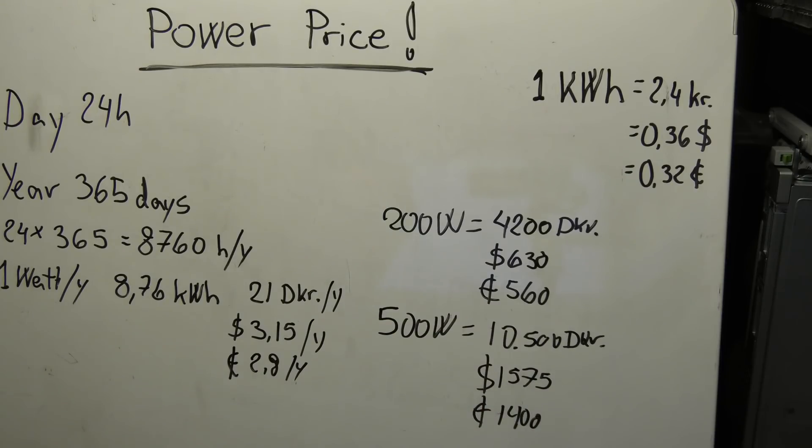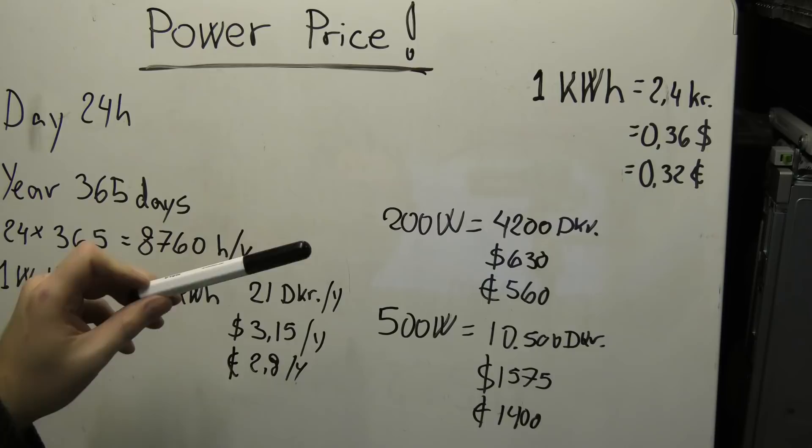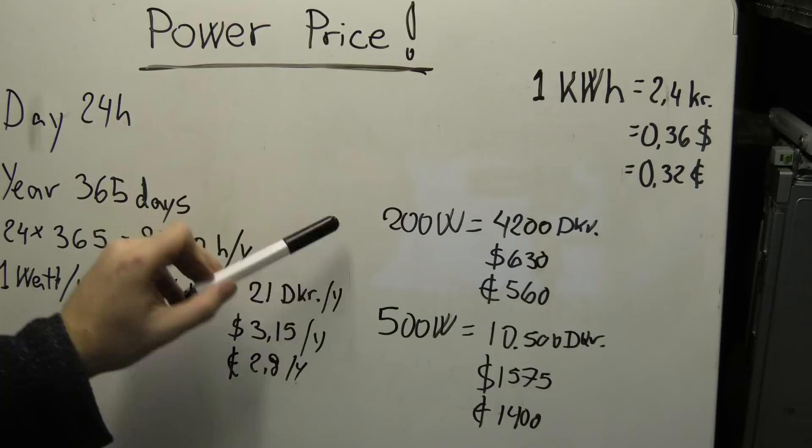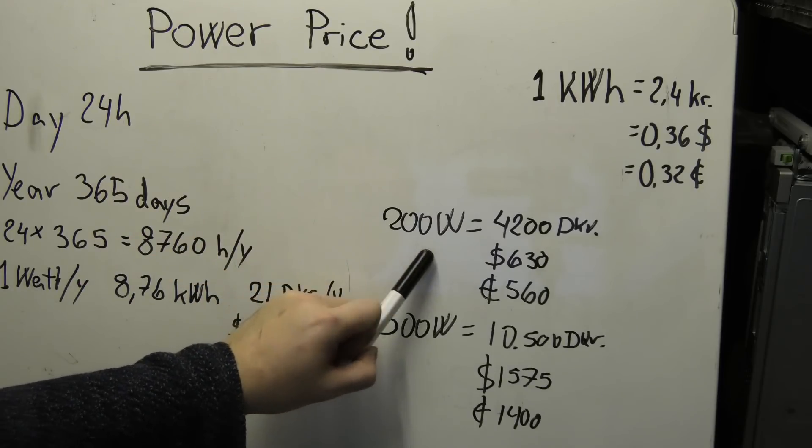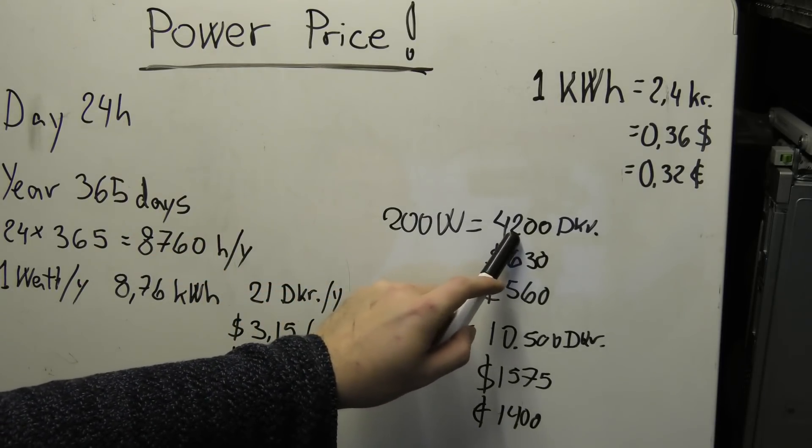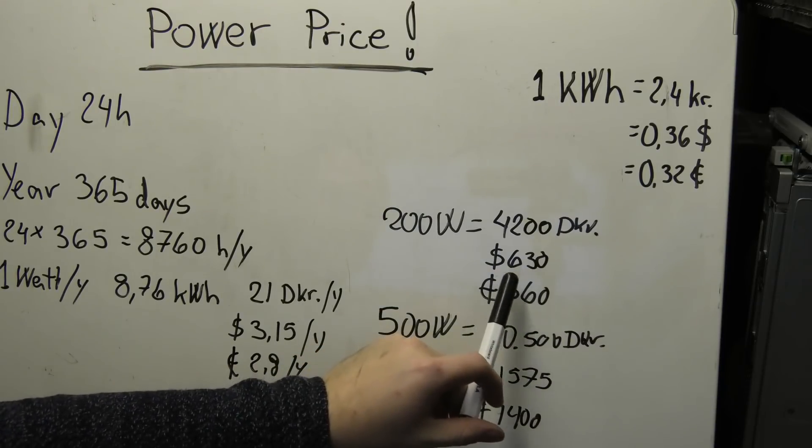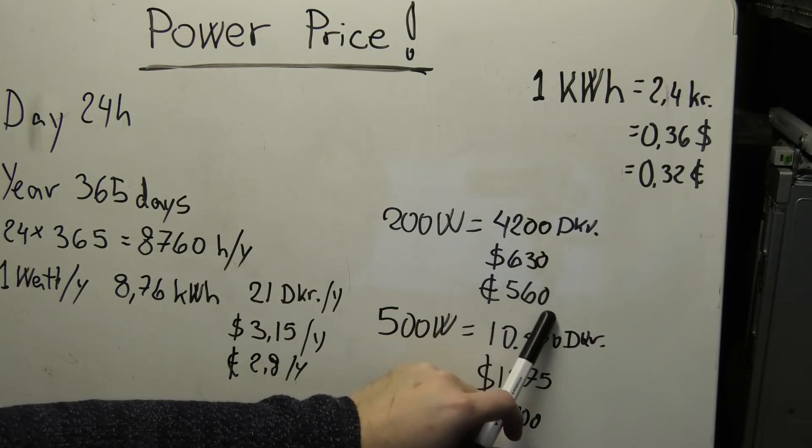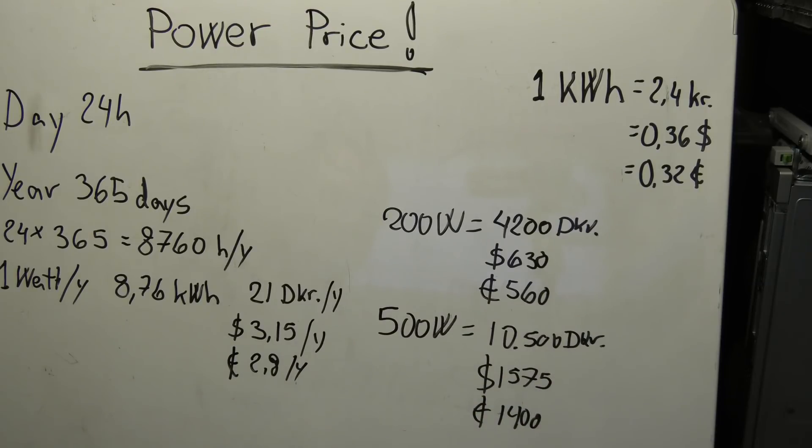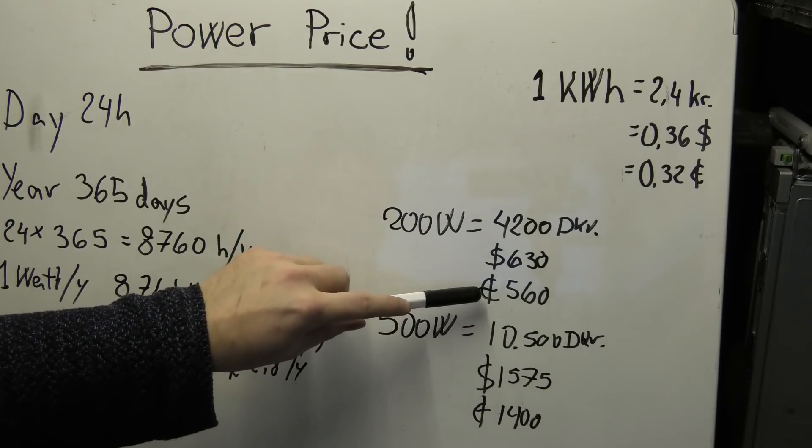So it becomes really expensive real fast. When you're buying new equipment, you have to take these things into consideration. I have some switches back here, two switches, one 10 gigabit and one one gigabit, and I approximate that they use about 50 watts each. So that's half of this, so every year I pay about 2,100 Danish kroner just to run my switches, and then that's half in dollars and half in euros.